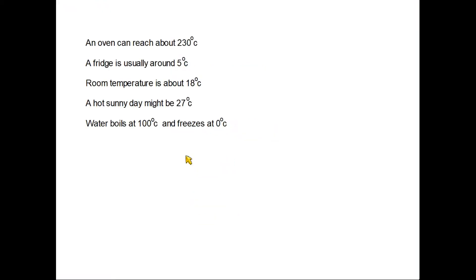Now here are some common temperatures just to give us an idea of how degrees Celsius works. So for instance an oven when it's cooking is usually up to around 230 degrees Celsius whereas your fridge is probably around four or five degrees.